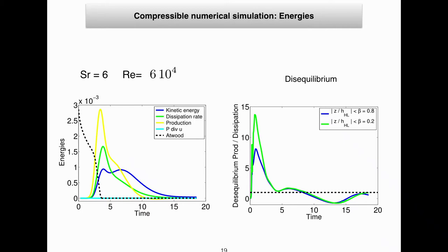We performed a full data analysis of this compressible simulation. The kinetic energy follows the evolution of the Reynolds number with two bumps. Production of energy follows the large-scale behavior. The dissipation also shows the influence of acoustic waves in the second part. We also examined the disequilibrium of the mixing layer — the ratio of production terms (baroclinic and others) divided by dissipation. Unlike a shear layer, there is no equilibrium here; instead, there is strong disequilibrium throughout the entire phenomenon.